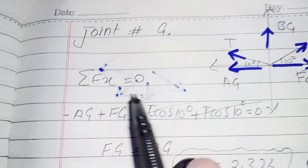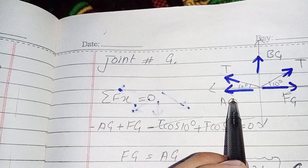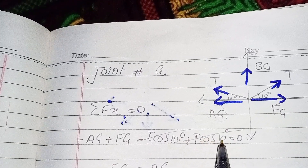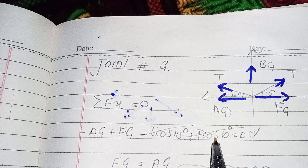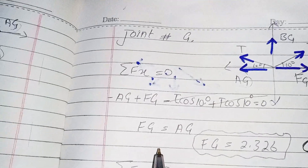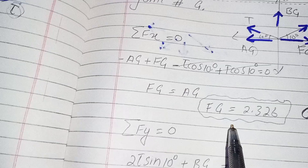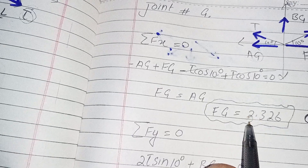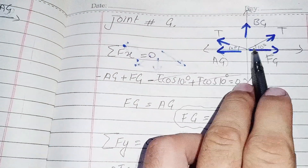Now I take joint G. Summation of horizontal forces equals zero: negative AG plus FG minus T·cos(10°) plus T·cos(10°) equals zero. The two T·cos(10°) terms cancel each other. So FG equals AG equals 3.326L, which is in compression.